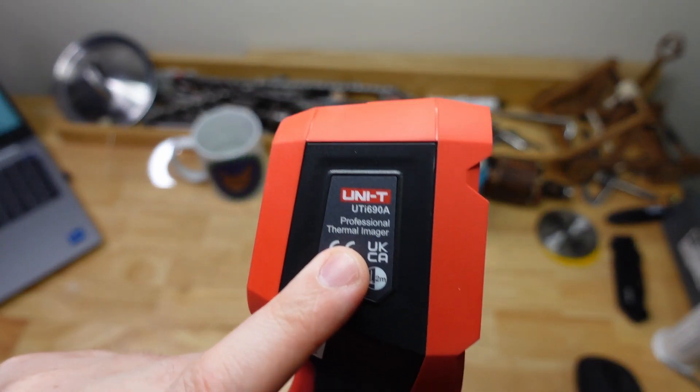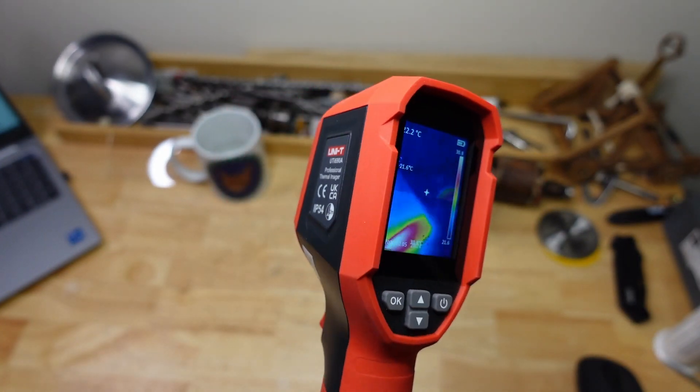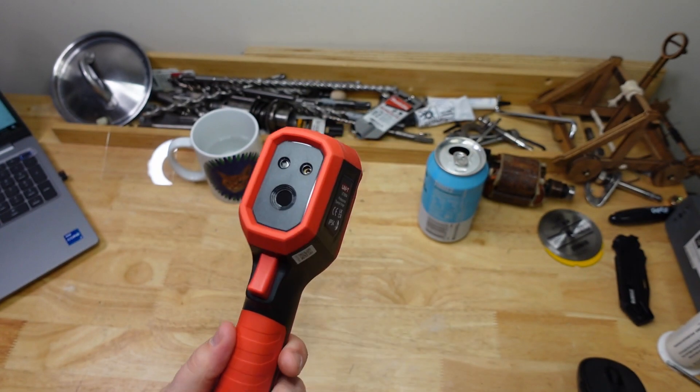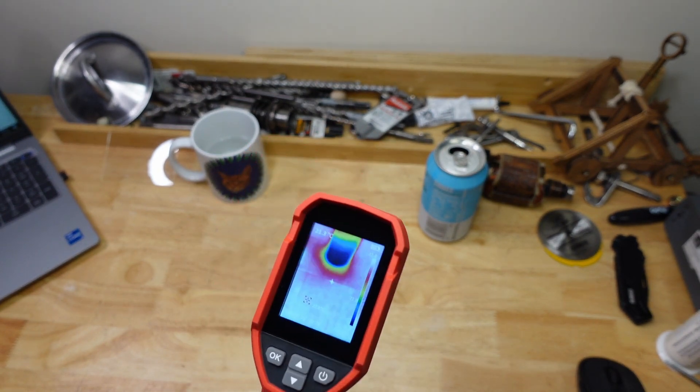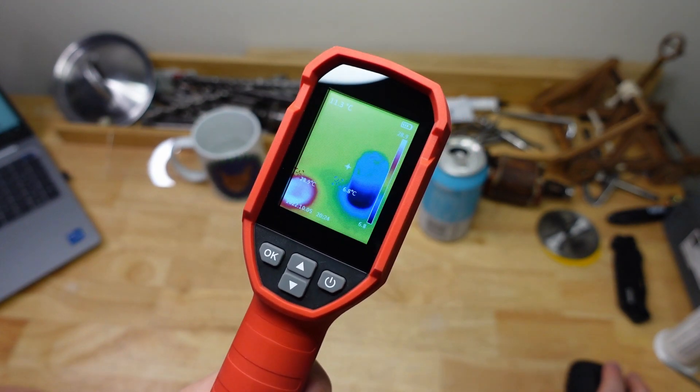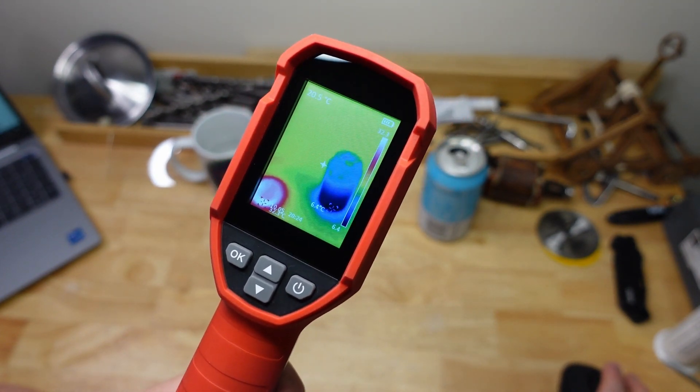So what is thermal imaging, or infrared? Well basically it's just a camera like any other. That's the lens there. It's got a little light, and I think that's a laser. And infrared is basically just light like any other, except we can't see it with our eyeballs.